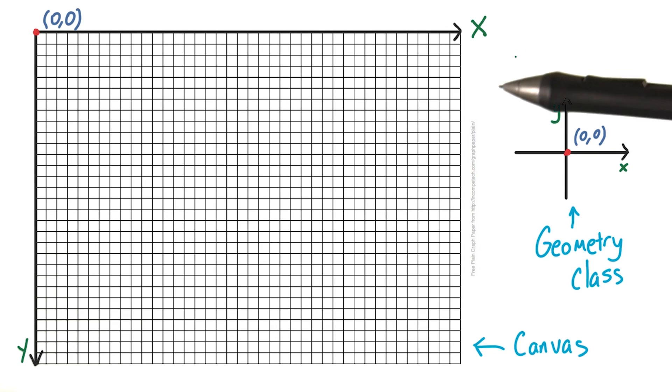We've got our canvas, and now we need to start thinking about how we're going to draw on it. To draw on the canvas, we're going to need to use coordinates. Otherwise, how will the computer know where we want our awesome drawings to end up?